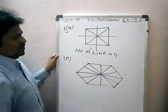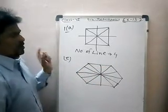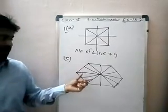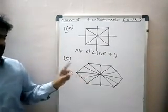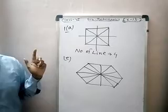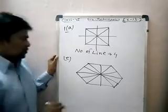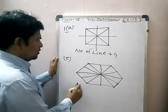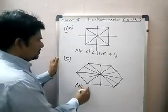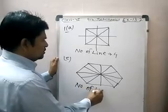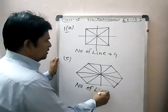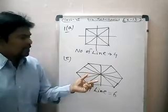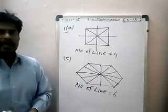Twelve parts of the figure are divided by the six lines drawn. All parts are the same size and shape. How many lines of symmetry are possible in this hexagon? The number of lines of symmetry possible is six.